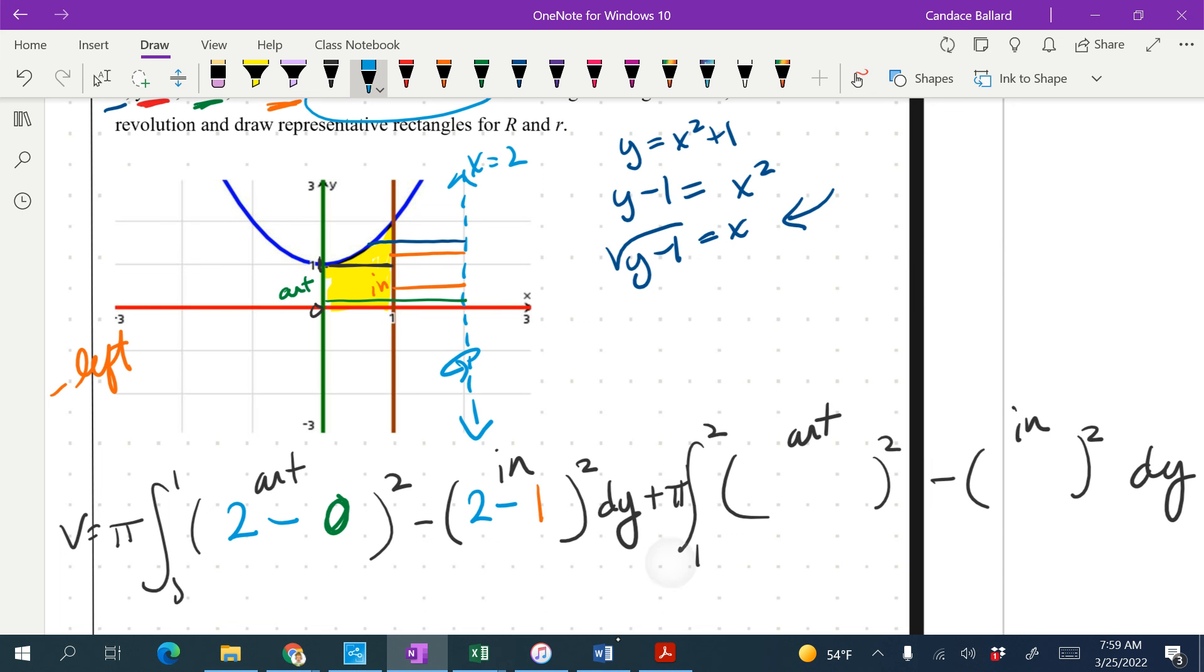My inner function is the brown one again. And then we're going to go right minus left. So my right is the 2, it's in the right in both of the functions, minus the left, which is my blue function for the outer. And I'm going to use the y value, so minus the square root of y minus 1.